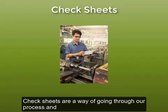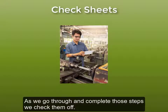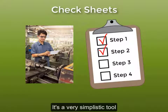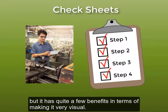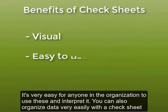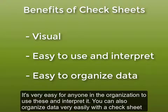Check sheets are a way of going through our process and documenting what the various steps are, and as we go through and complete those steps we check them off. It's a very simplistic tool to monitor our process and make sure all the steps are being completed in the proper order. But it has quite a few benefits in terms of making it very visual — it's very easy for anyone in the organization to use and interpret. You can also organize data very easily with a check sheet.